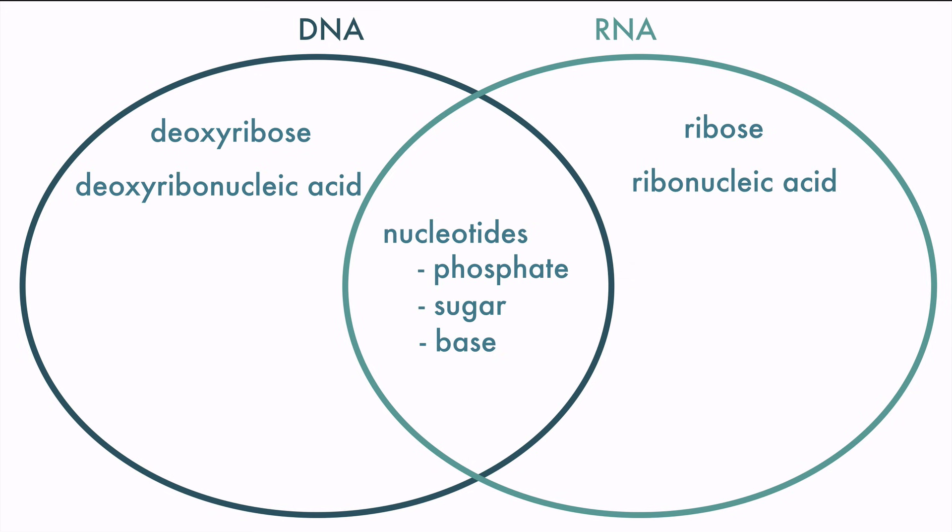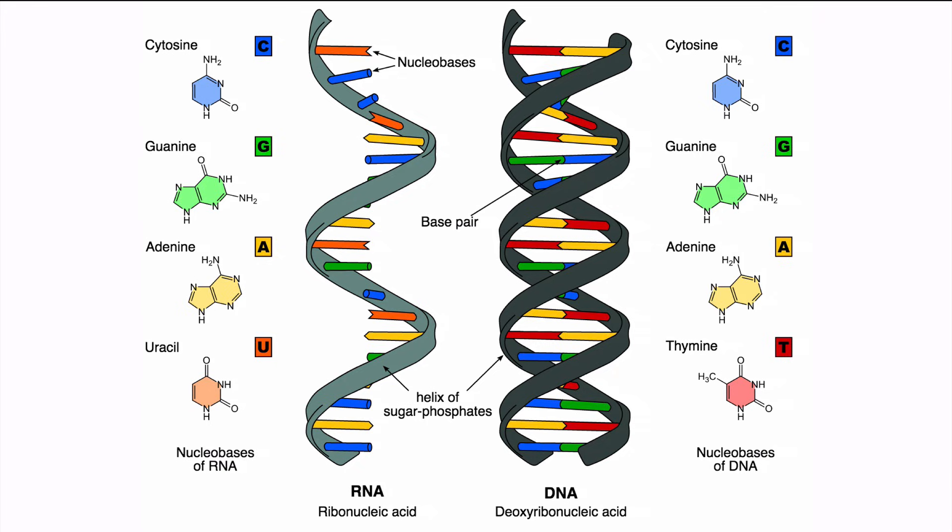DNA and RNA also look rather different. DNA is double-stranded, but RNA is only single-stranded. And for the bases, they both use cytosine, guanine, and adenine, but RNA will use uracil and DNA will use thymine.